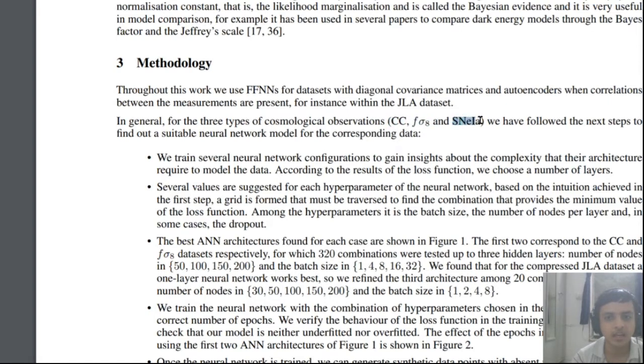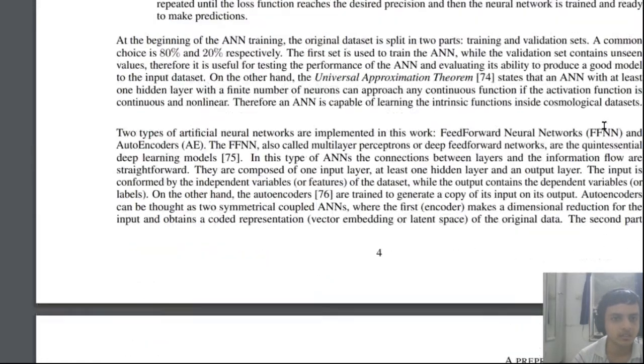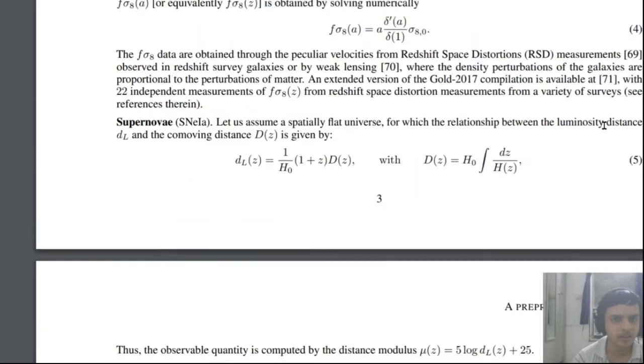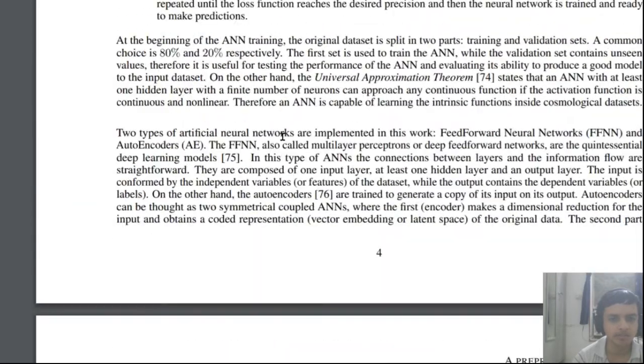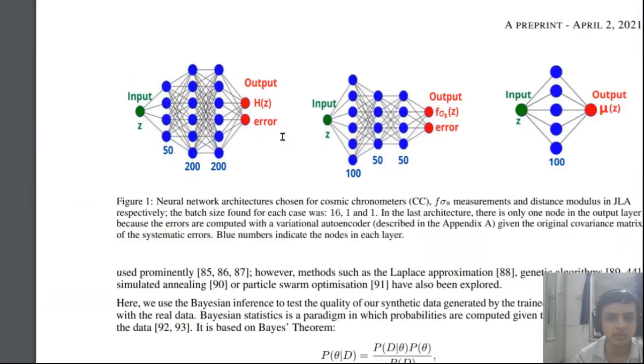And this SN Ia, which is this supernova data, observed data from the supernova Type Ia supernova.